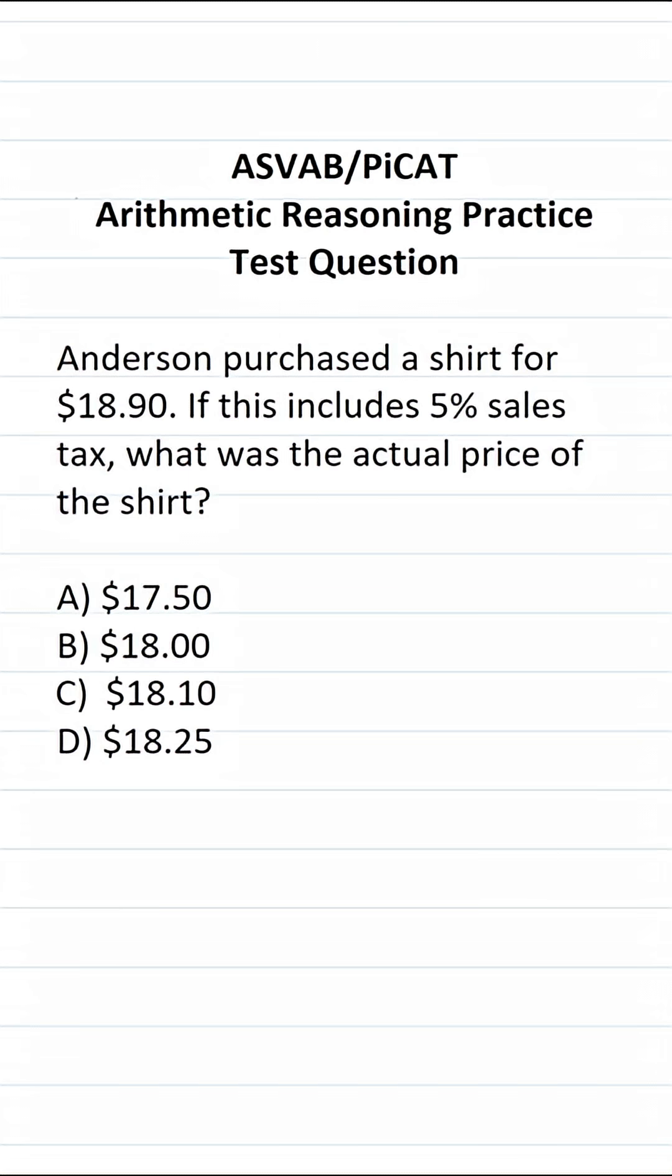In other words, we want to know the price of the shirt that doesn't include sales tax. The total price of the shirt is going to be equal to the original price of the shirt plus the original price times the tax amount.